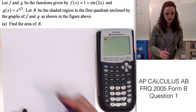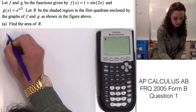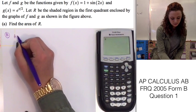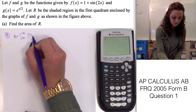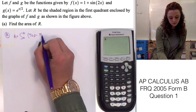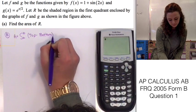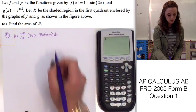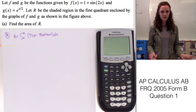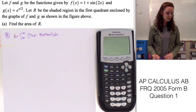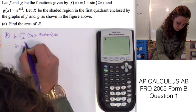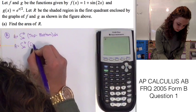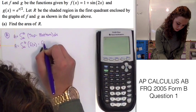We know that to find the area, the formula is the integral from a to b of the top function minus the bottom function. Looking at the graph they gave, we can tell that the top function is f of x and the bottom function is g of x. So the area A is going to be equal to the integral from a to b of f of x minus g of x.